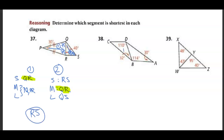We're going to do the same thing here with triangle 1 and triangle 2. If that angle is 110 degrees, we subtract 110 and 32 from 180, giving us 38 degrees — this is the smallest angle. So CD is the smallest side for triangle 1. The medium side is BD, and the largest side is BC.